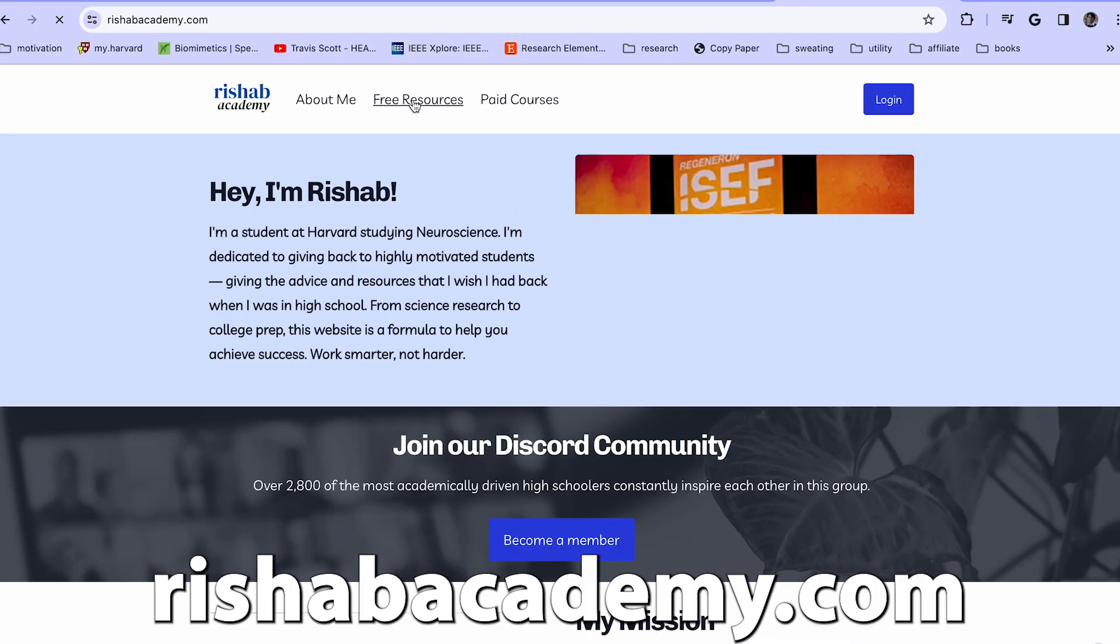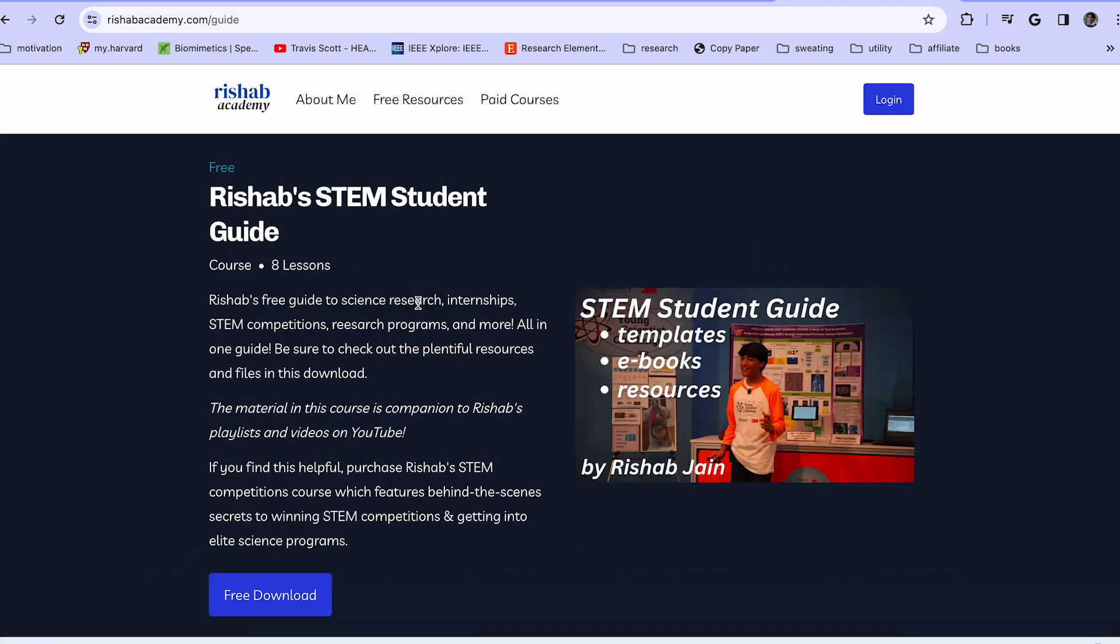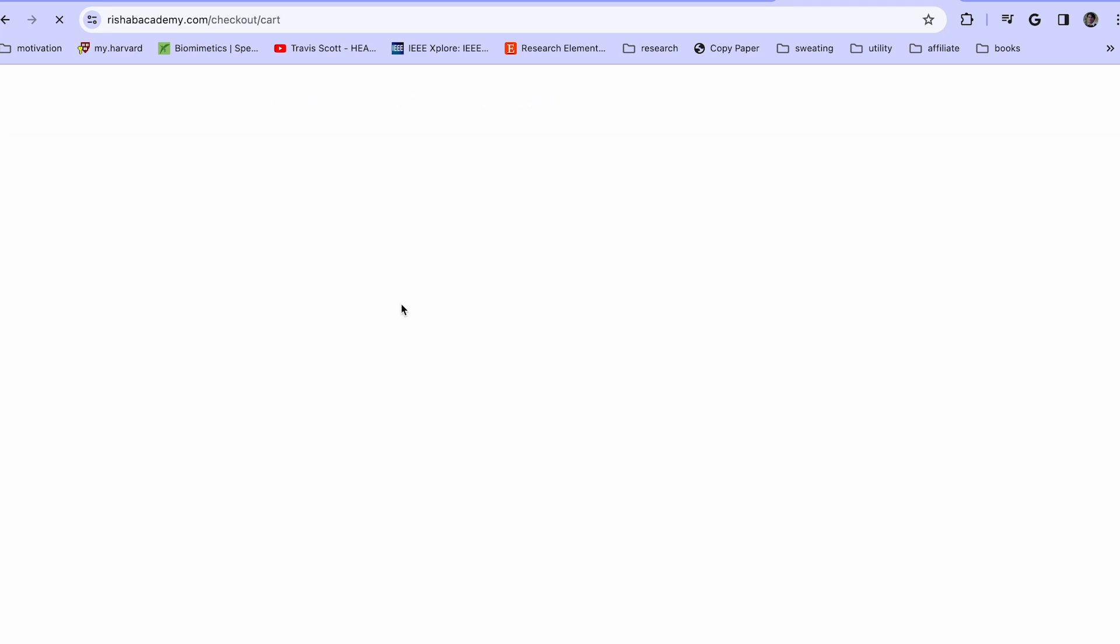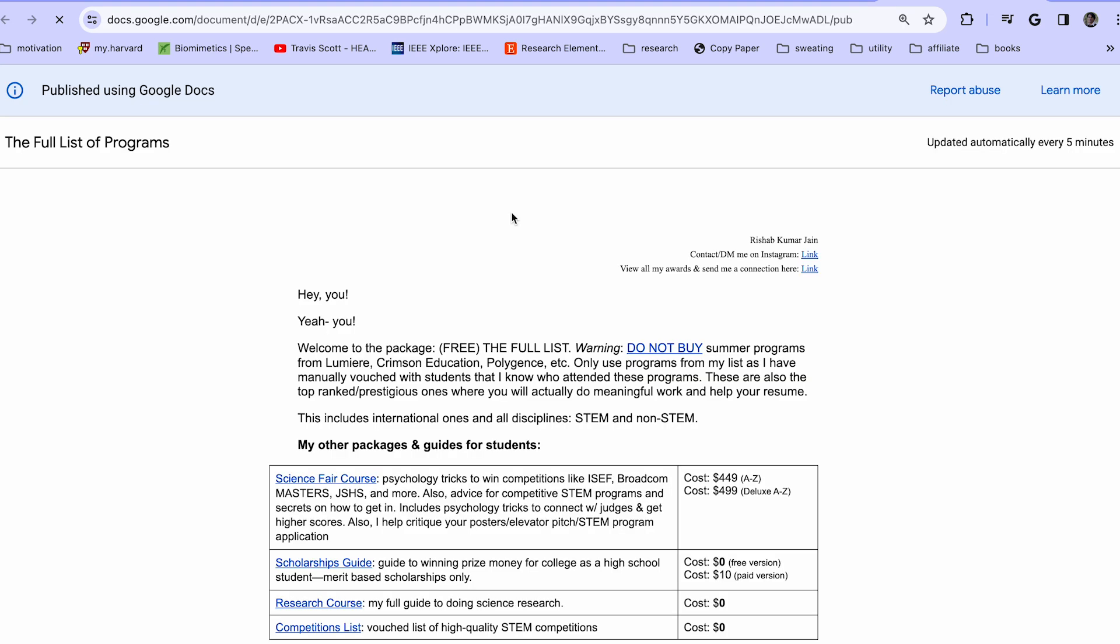On my new website, Rishabacademy.com, head to the free resources tab, and then Rishab's STEM student guide. Press free download, put in your email, and then click on the product. On this list, I've manually curated 50 research programs that you can apply to.